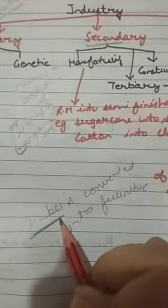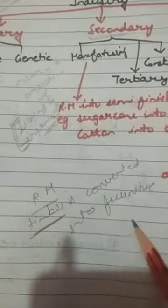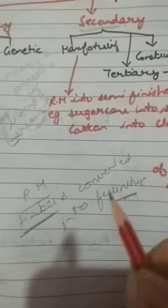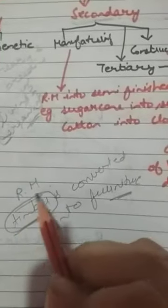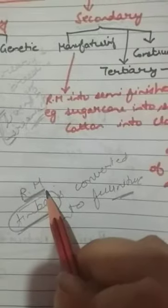Another example: timber is converted into furniture, and iron into steel. Timber is the product of the primary industry — it is the raw material — and furniture is the final product. The process of converting timber into furniture is part of the manufacturing industry. The primary industry supplies the raw material used by the manufacturing industry.